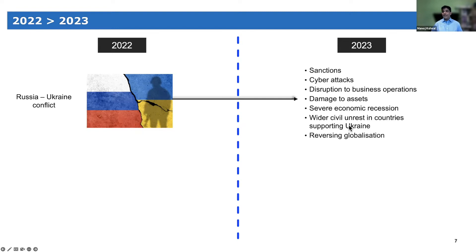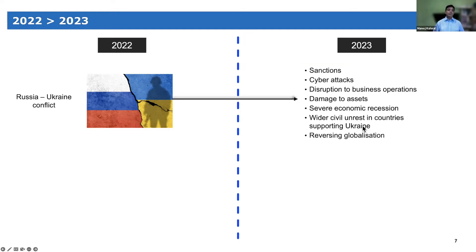If the conflict continues for a large part of 2023, there is also the likelihood of civil unrest in countries supporting Ukraine, and we've already seen some of these protests in certain parts of Europe. That civil unrest could result in business continuity and business disruption risks for financial services firms in those countries. One emerging driver from this conflict is the reversing of globalization — COVID and the conflict highlighted that our supply chains became too complex, with too many vendors across too many different countries.